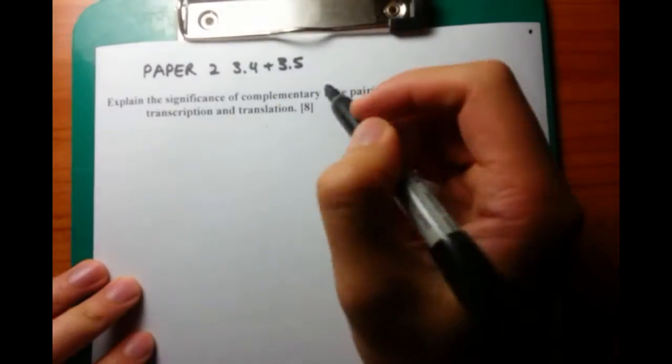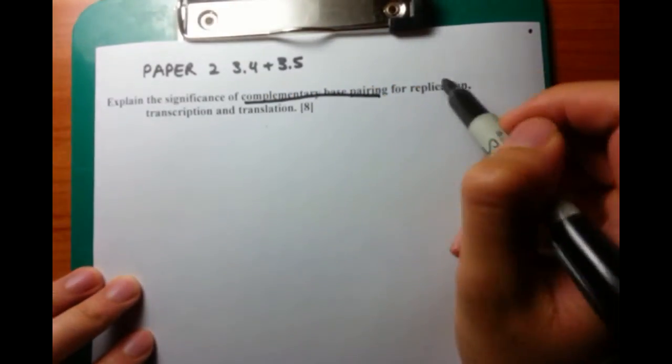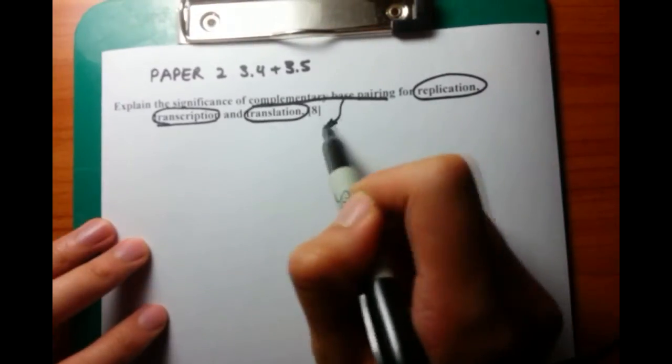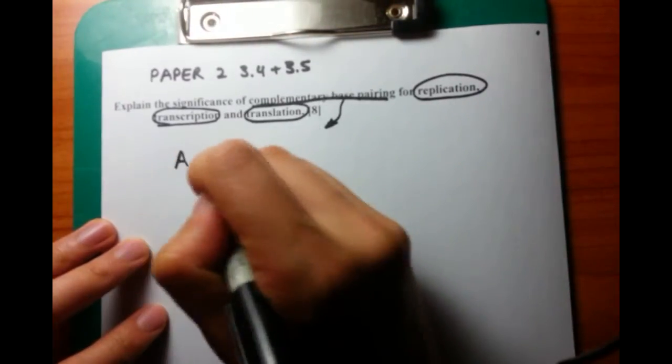So this next question that we're going to do is a rather hard question that I really don't like. It's explain the significance of complementary base pairing for replication, transcription, and translation.